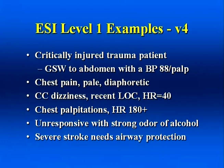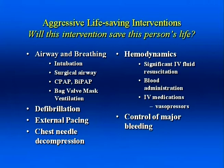Additional Level 1 examples include chest pain with pale, diaphoretic presentation and a blood pressure of 90 palpable; a patient with dizziness and recent loss of consciousness presenting with a heart rate of 40; chest palpitations with a heart rate of 180; unresponsive with a strong odor of alcohol; and severe stroke needing airway protection. For each of these examples, the patient needs immediate aggressive life-saving interventions. Interventions include intubation, surgical airway, CPAP or BiPAP, bag valve mask ventilation, defibrillation, cardioversion, external pacing, chest needle decompression, significant volume replacement, immediate administration of vasopressors, glucose, and control of major arterial bleeding.